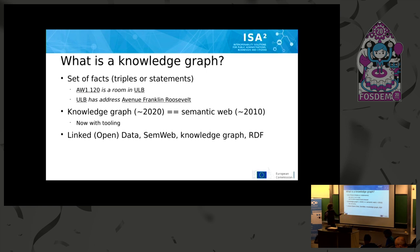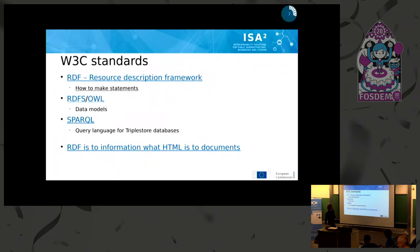You'll see different kinds of terms thrown around: linked data, linked open data, semantic web, knowledge graphs, RDF — all of those are essentially synonyms for the same ideas. What makes knowledge graphs particularly interesting is that everything is based on standards. Graph databases like Neo4j define their own standards, but what we use on the semantic web is really W3C standards, which makes it very robust and portable.